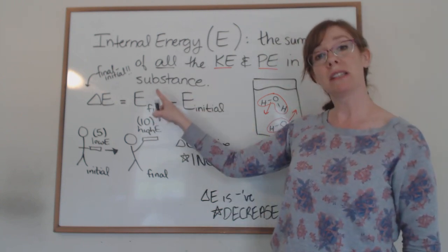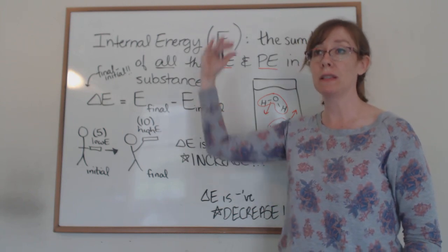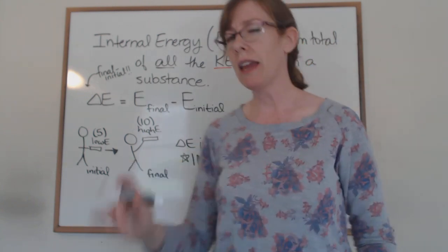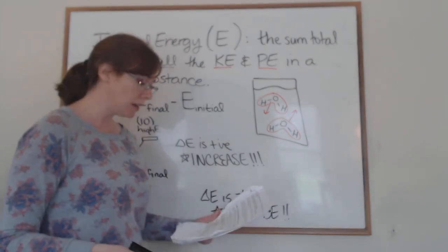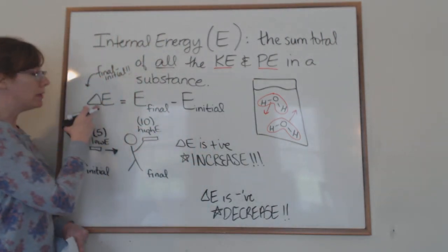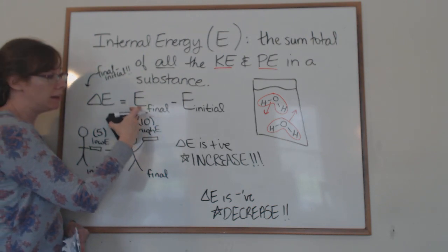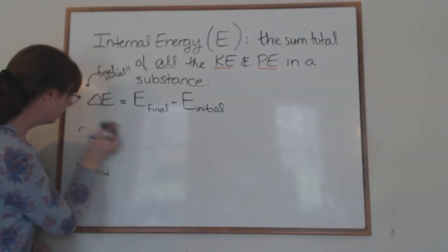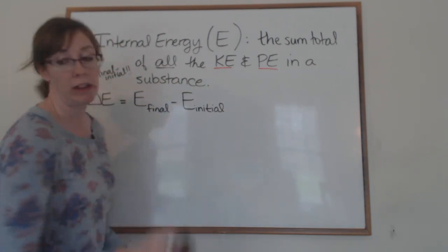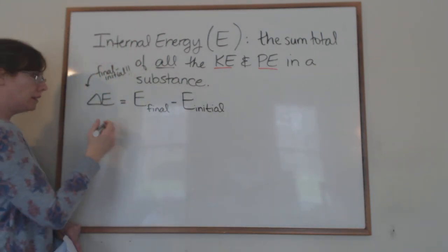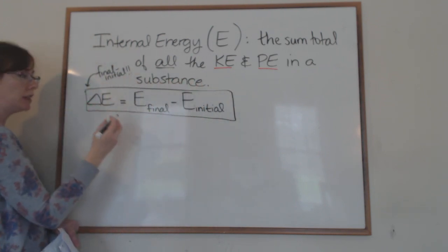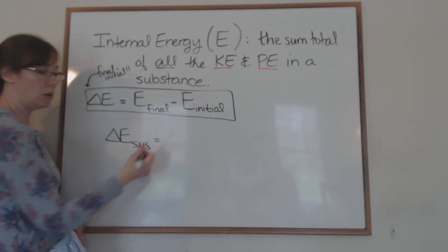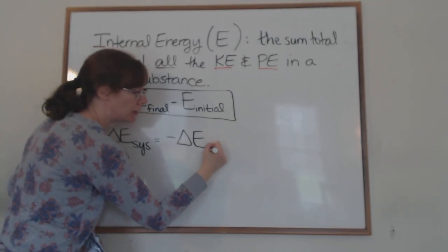Another way to think about delta E: the change in energy of the system will always equal the negative change in energy of the surroundings. This is actually just a restatement of the law of conservation of energy — also known as the first law of thermodynamics — which states that energy can neither be created nor destroyed.